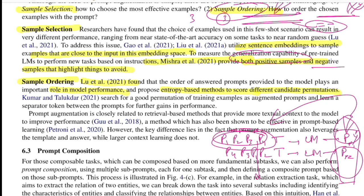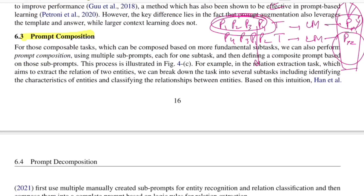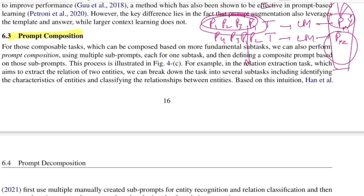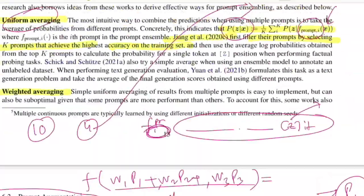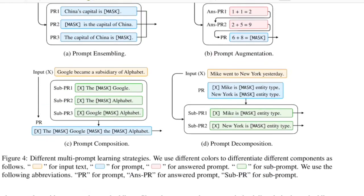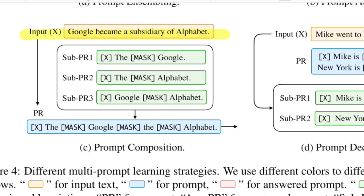Prompt composition builds on tasks with layered structure. Consider relation extraction: given the input 'Google became a subsidiary of Alphabet,' the final goal is to predict the relation between Google and Alphabet. But more fundamental sub-tasks first identify what Google is and what Alphabet is, before predicting the relation between the two entities.